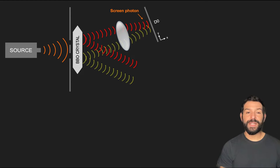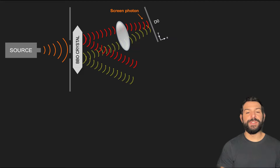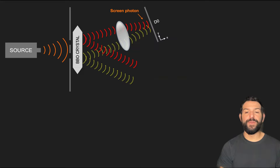The second photon is emitted in a different direction and carries information about which slit the source photon went through in the form of a superposition. This is sometimes referred to as the which-path information, so we will refer to this photon as the information photon.